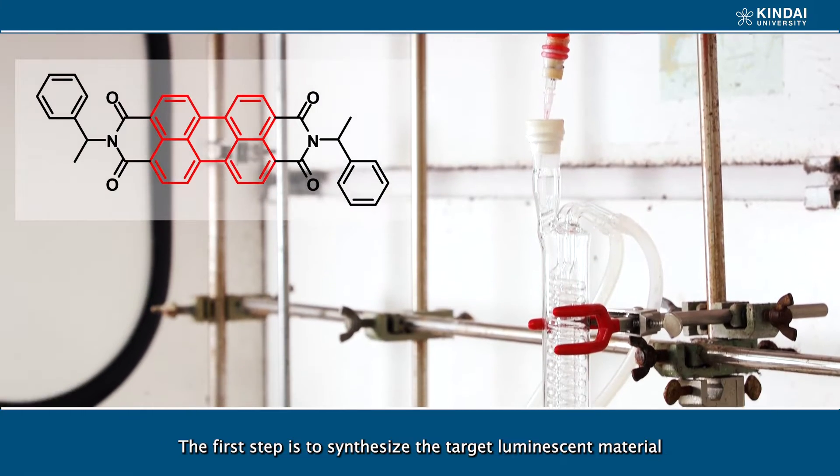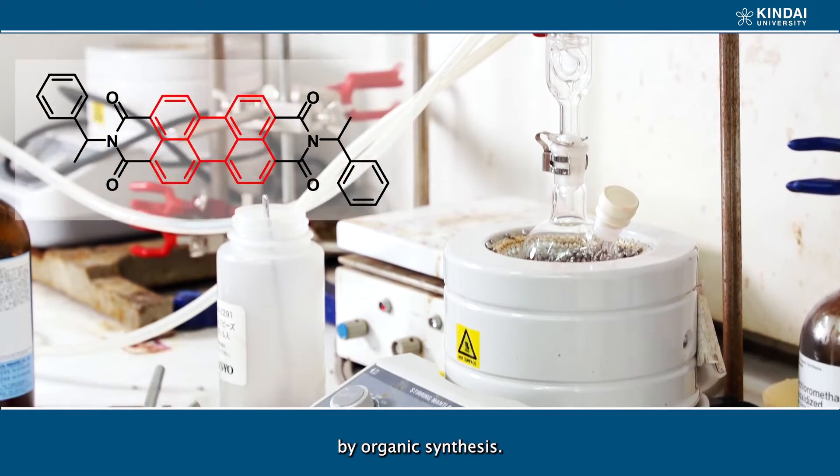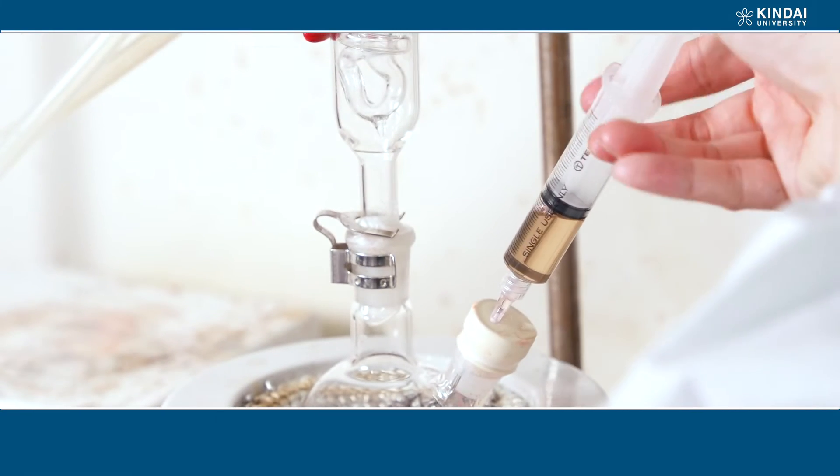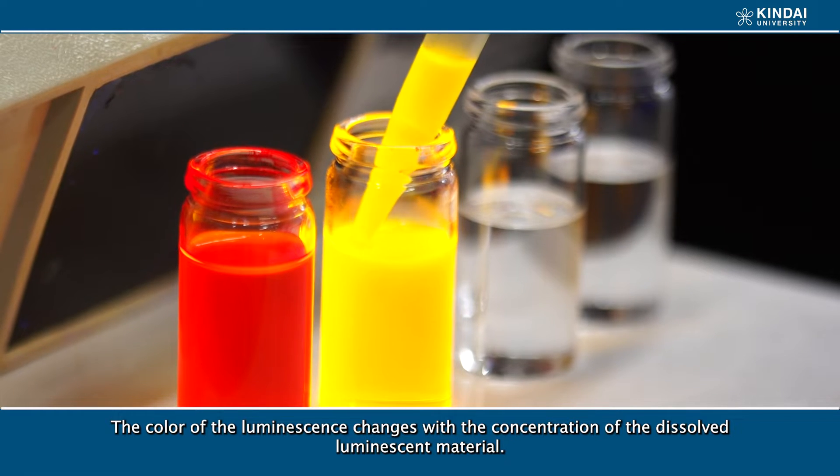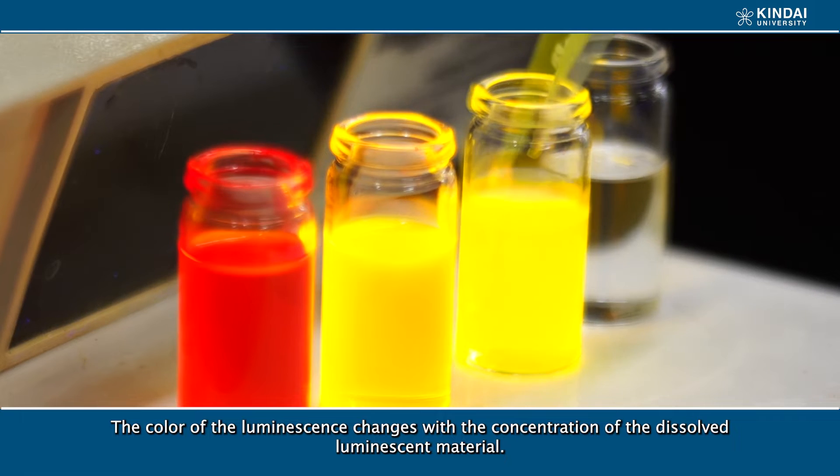The first step is to synthesize the target luminescent material by organic synthesis. The color of the luminescence changes with the concentration of the dissolved luminescent material.